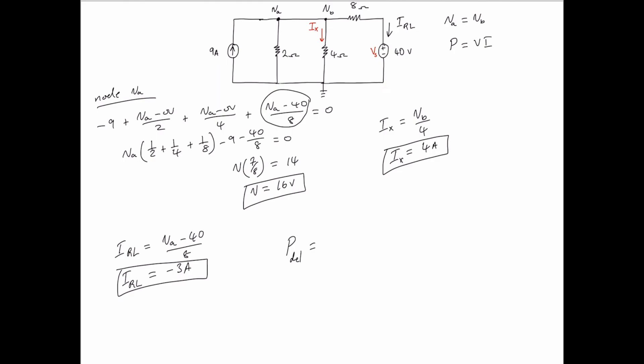Power delivered is equal to the voltage source times I right loop, and that is 40 times negative 3, which equals negative 120 watts. And as always, the negative sign indicates that power is being supplied or delivered.